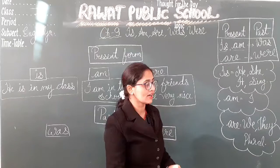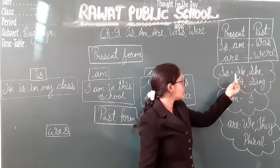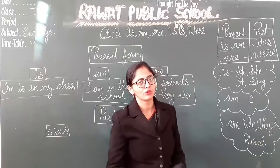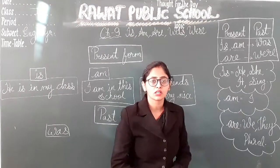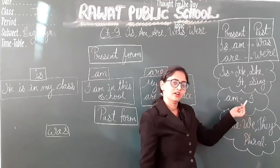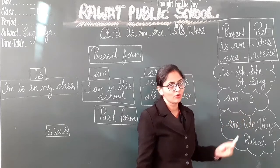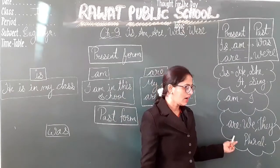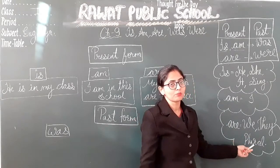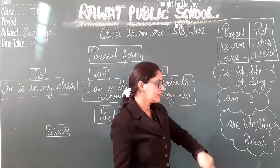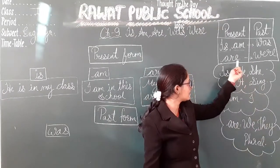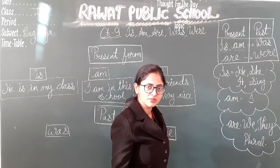We use is with he, she, it, this, that, or any singular noun. We use am with I — I am. We use are with we, they, or any plural noun. And the past form of is is was, and the past form of are is were.